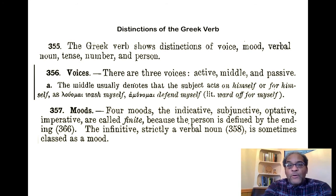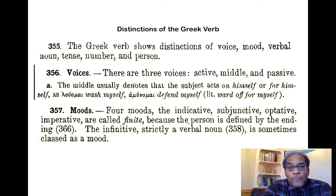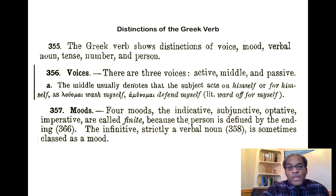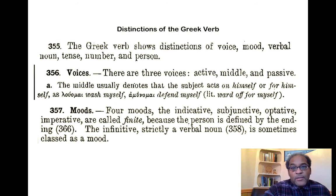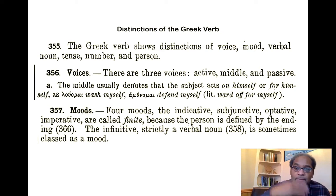There are three voices in Greek: the active voice, the middle voice, and the passive voice. The active and the passive should be familiar to you from English. The middle voice is new. The middle voice usually denotes that the subject acts on or for himself. So luomai means 'I wash myself' as opposed to luo, 'I wash the dog.' Amunomai is 'I defend myself' or 'ward off on my behalf' — a fly, an enemy.